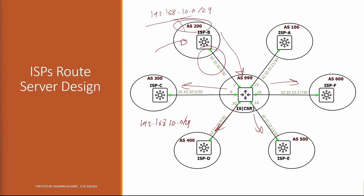The autonomous system will be 200 and the MED will be the same as set by switch B. Autonomous system 999 will not be present in the AS Path. Any IP address related to the route server will not be set as the next hop — it will be transparent.